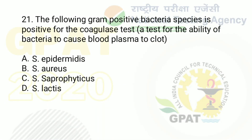Question number 21: the following gram-positive bacteria species is positive for the coagulase test — a test for the ability of bacteria to cause blood plasma to clot. Option A: S. epidermidis. Option B: S. aureus. Option C: S. saprophyticus. Option D: S. lactis. The right answer is option B — S. aureus.